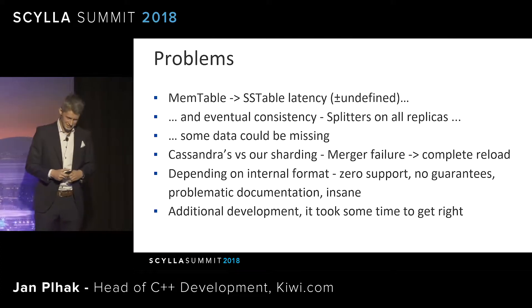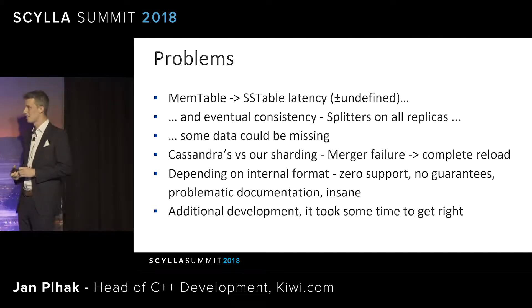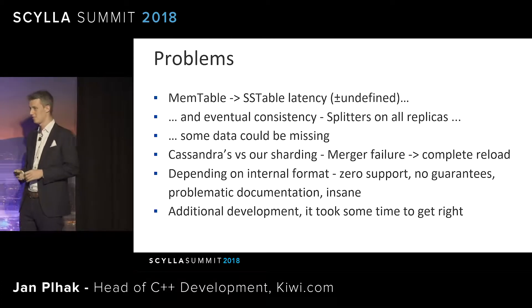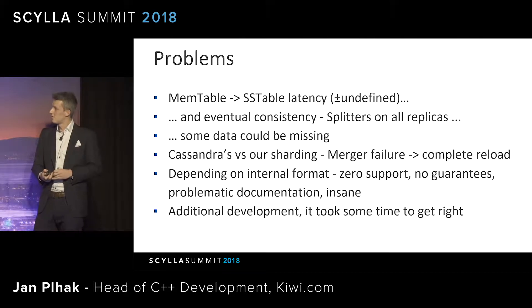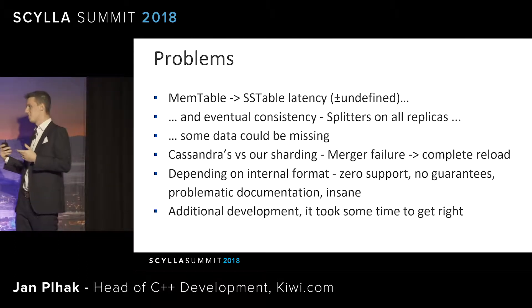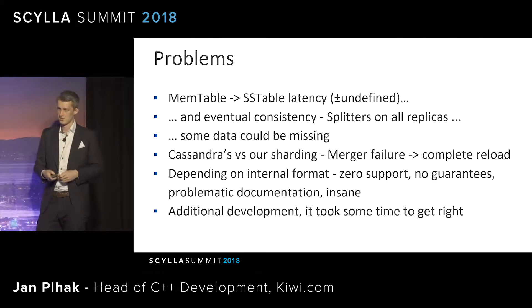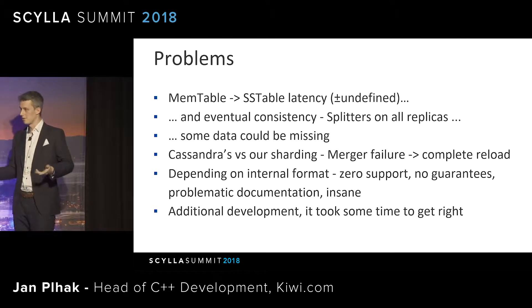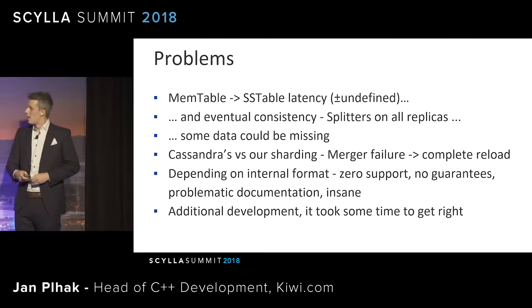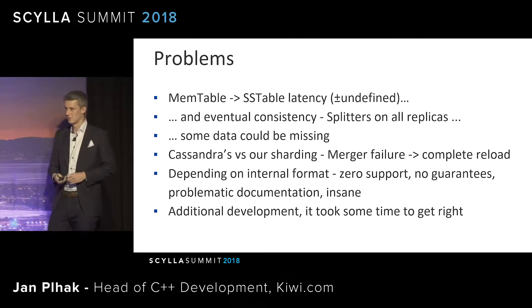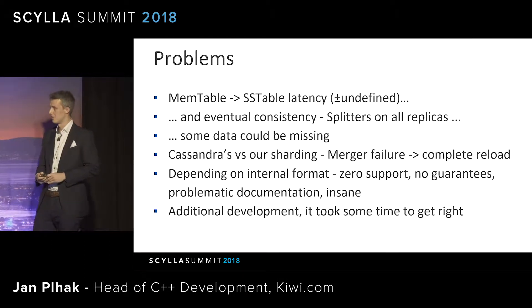There are some problems. It's not very well defined how long it takes for Cassandra to flush data from memtables to SSTables — it's defined-ish but can really depend on the workload. With eventual consistency, you don't really have a guarantee that deploying splitters on one data center gives you all the data, so you have to deploy splitters on all Cassandra nodes — in our case three times more load — and you have to parse all the data even though most of the time you get it duplicated across replicas. Our obvious problem is that we are depending on a weird, non-public internal format of Cassandra — zero support, no guarantees, no documentation. It is insane.